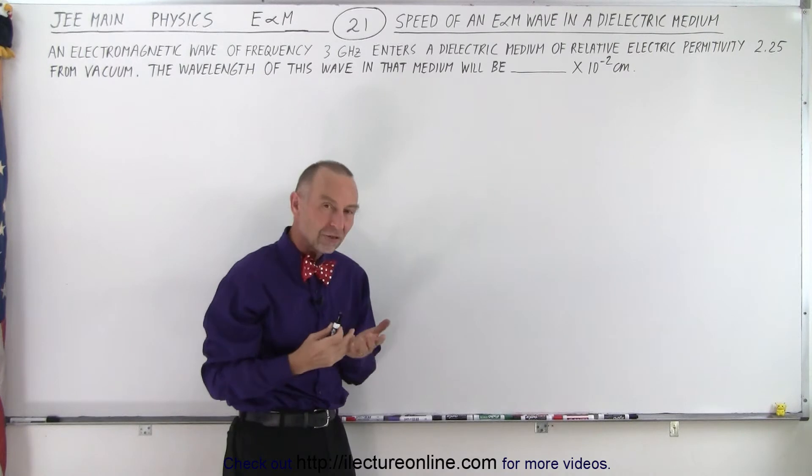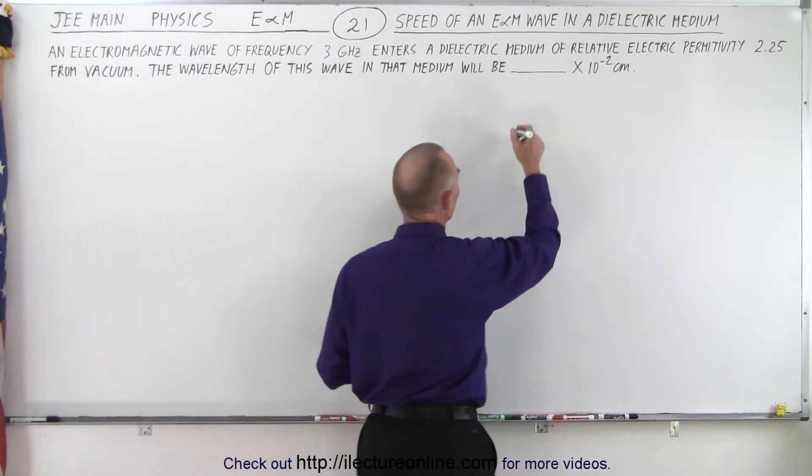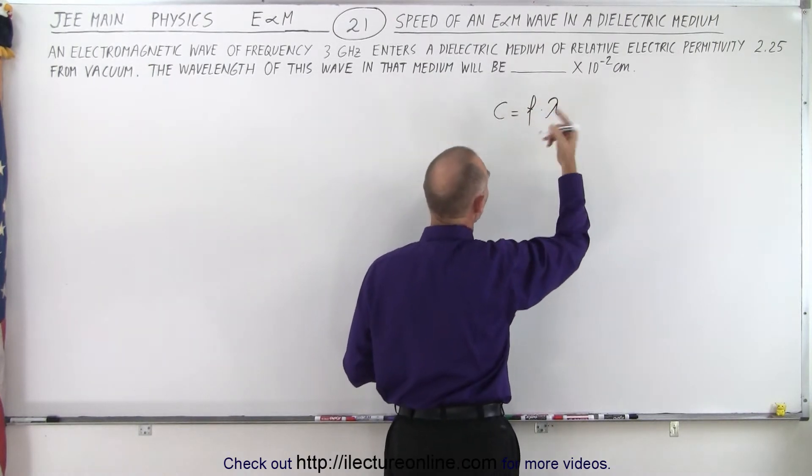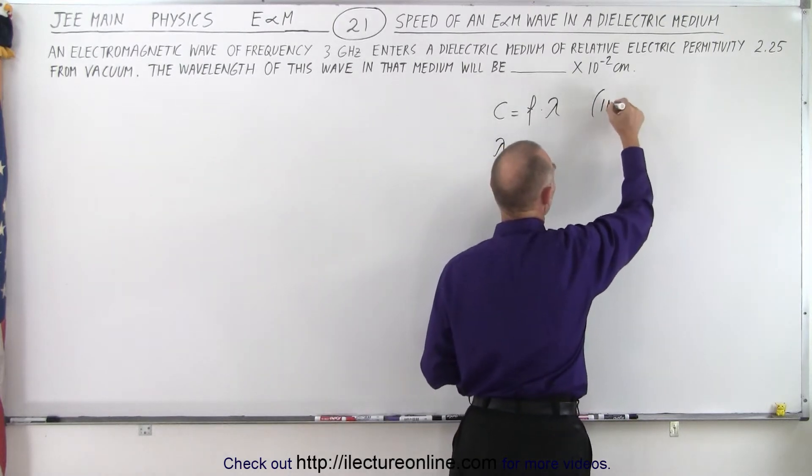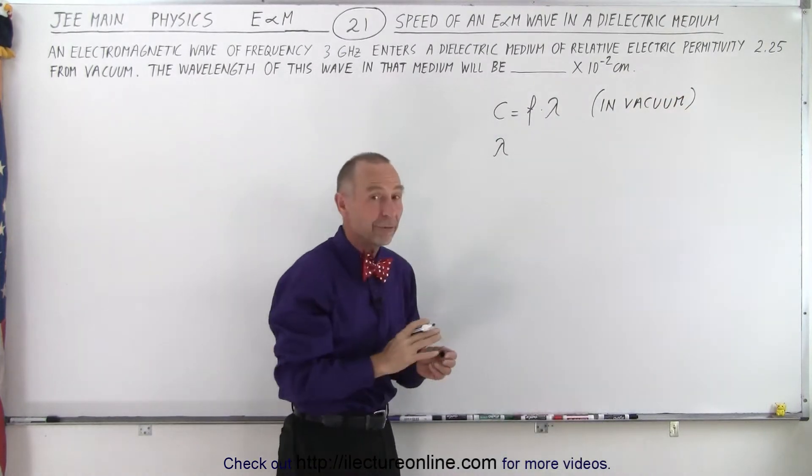But first of all let's talk about the speed of light in a vacuum. We know that the speed of light c is equal to the frequency times the wavelength. So in this case the wavelength, and of course this would be in a vacuum. So let's make sure we put that down. And again this is just background information.